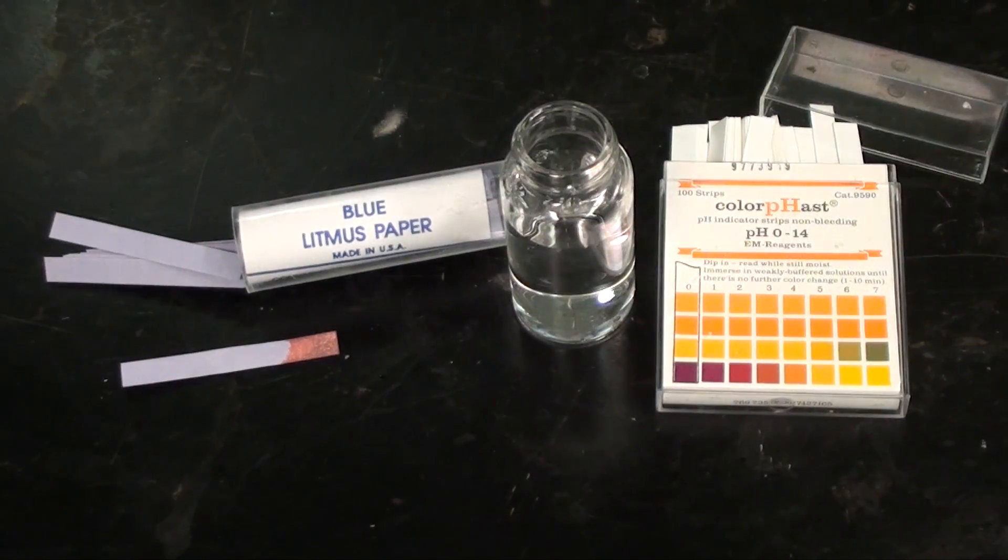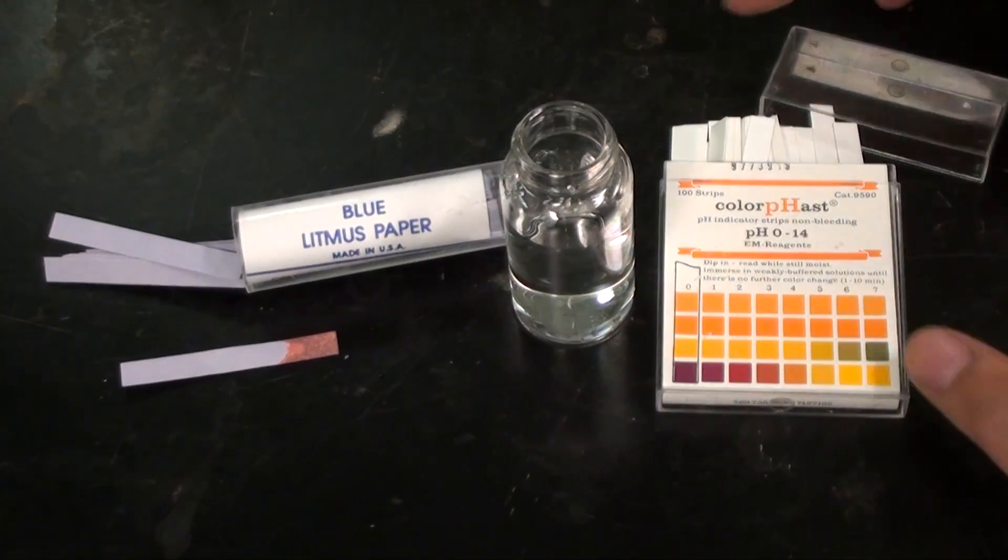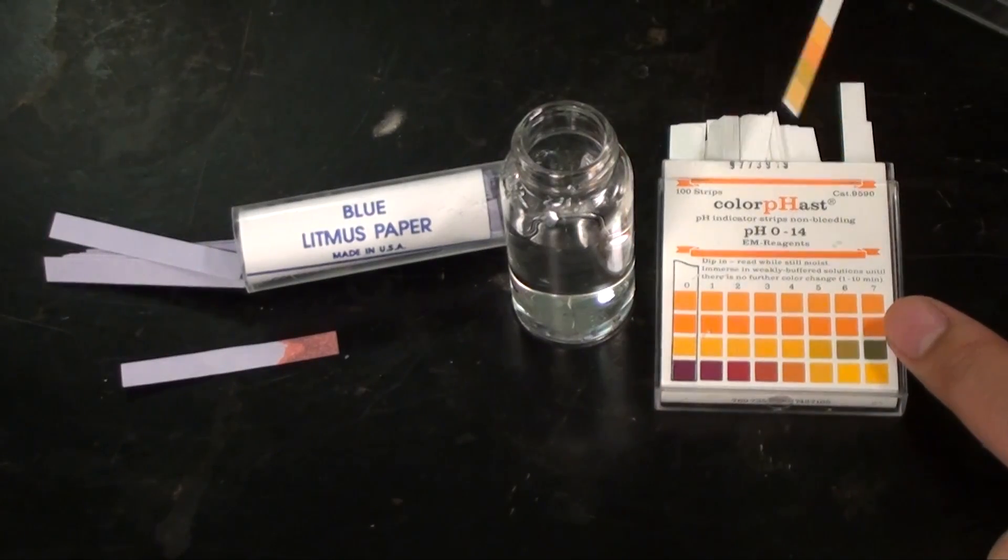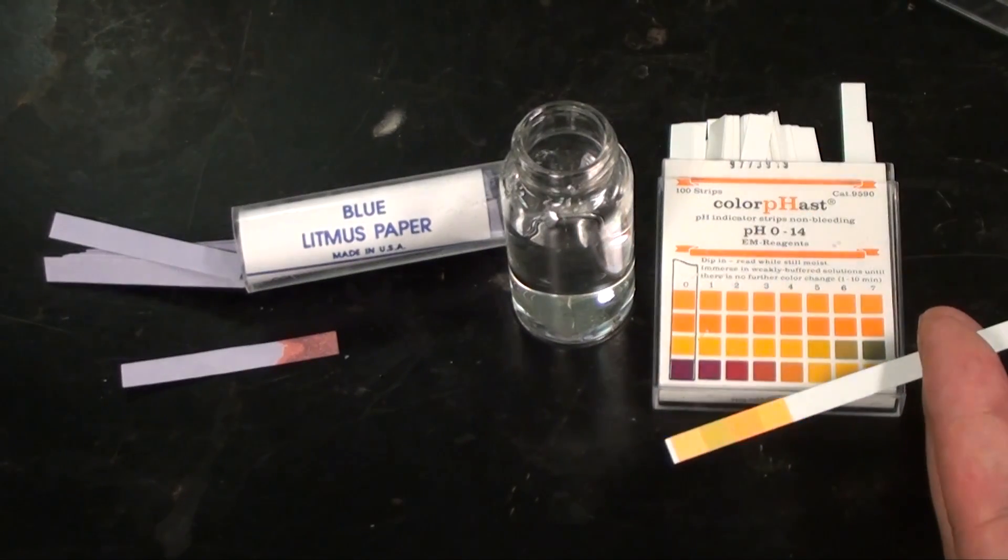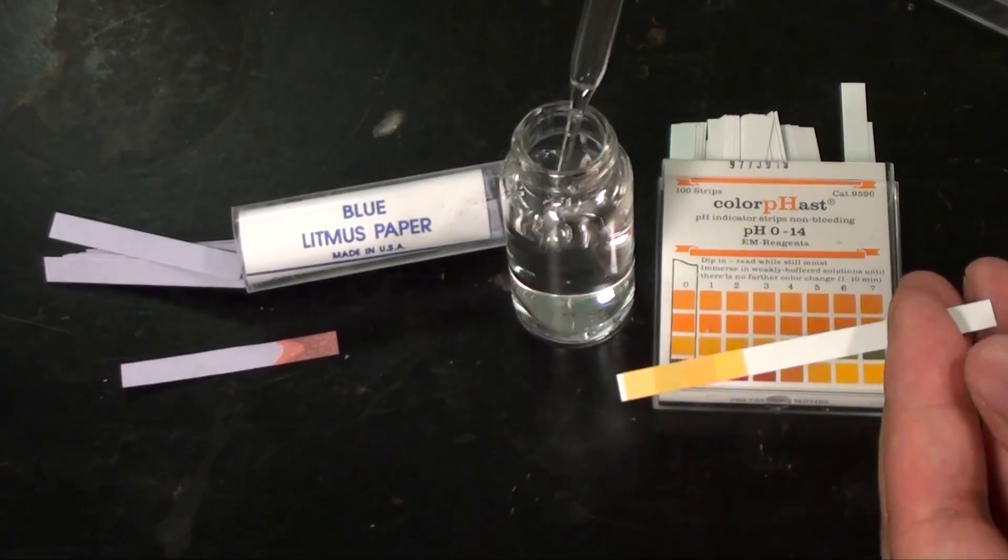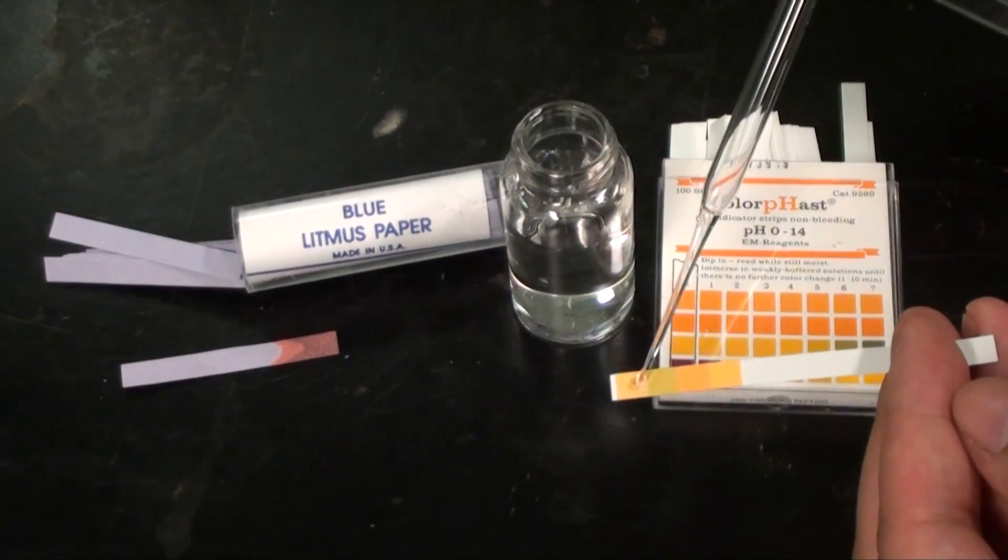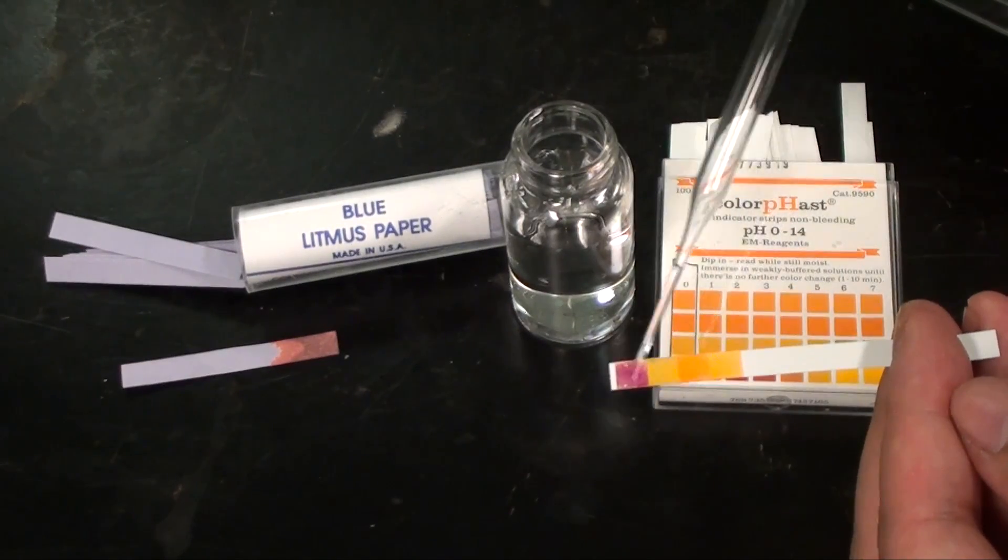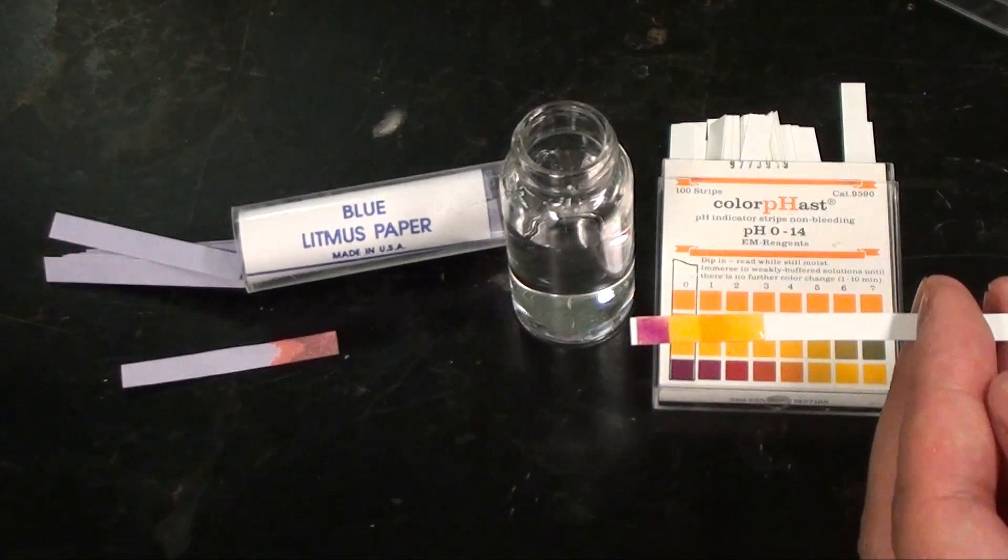Litmus paper is good for simple acidic or basic measurements, but for more precise determination we have this more advanced pH paper on the right. It consists of multiple strips of pH indicators that have different transition points. Just apply a small drop of the solution you want to measure to the strip. Dipping the strip is actually not the best way to use pH paper because you might contaminate your sample with the indicators used on the paper.